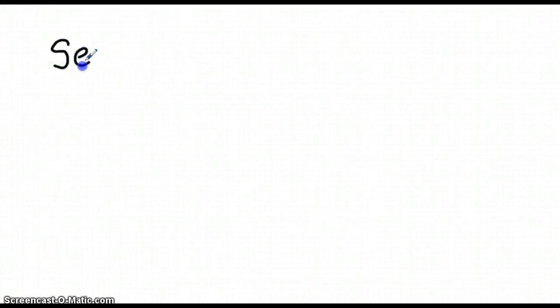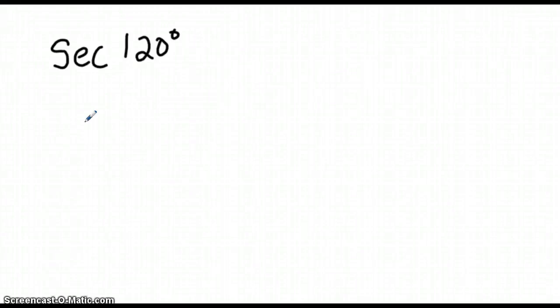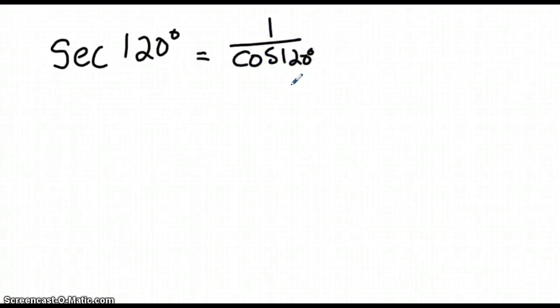Today: what is the secant of 120 degrees — what is the exact value? Well, there are two ways you can think about this. You can say secant of 120 degrees is equal to the reciprocal of cosine of 120 degrees. Cosine of 120 degrees is negative one-half, therefore secant of 120 degrees is negative 2.